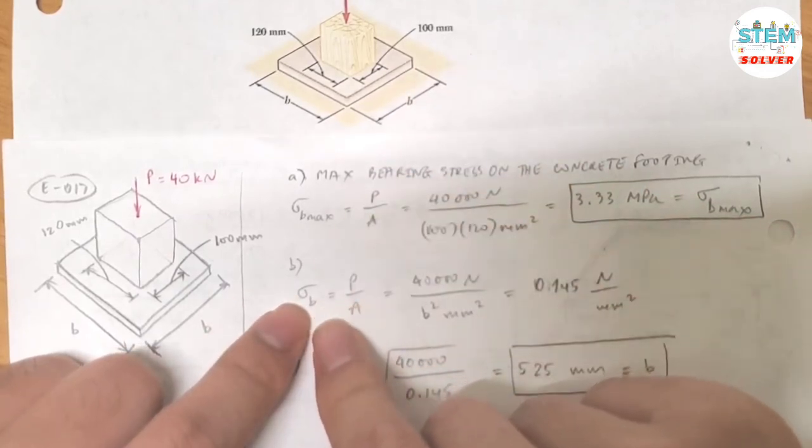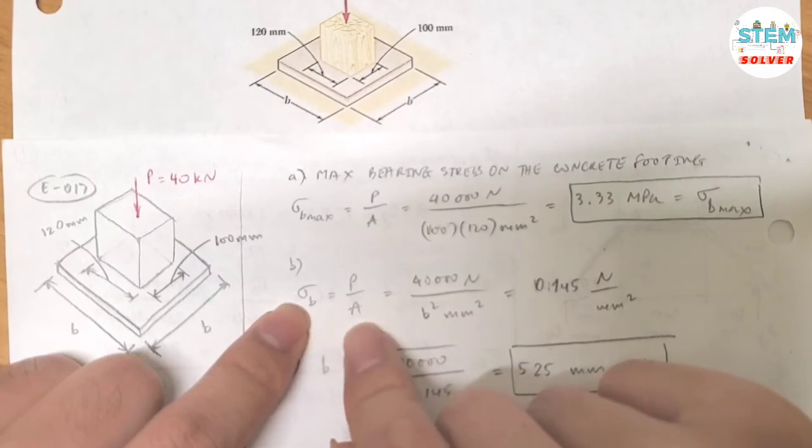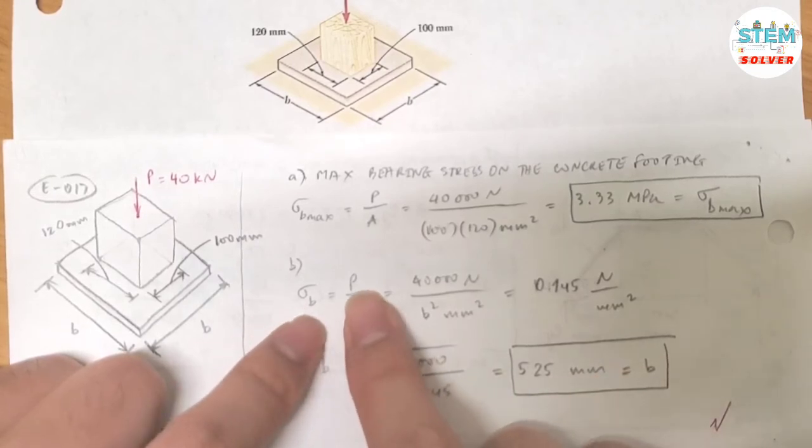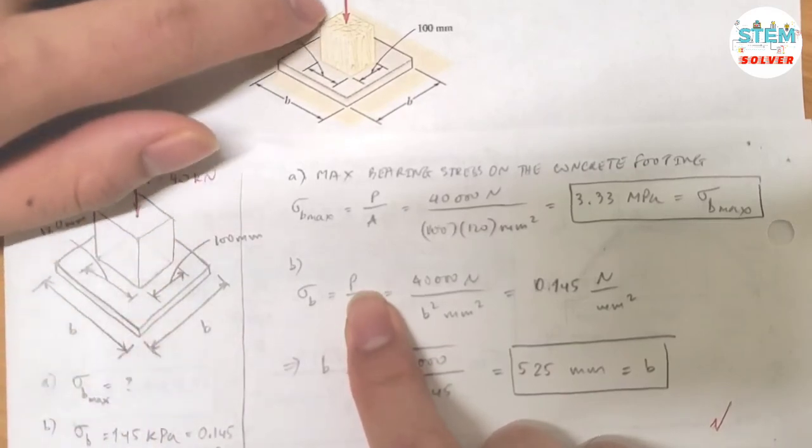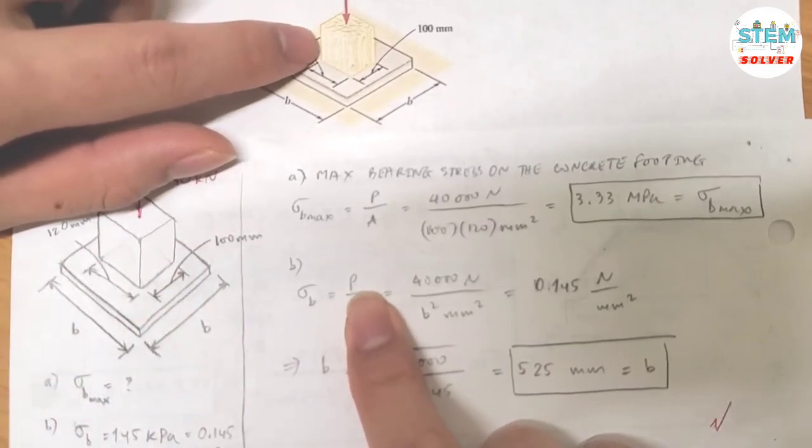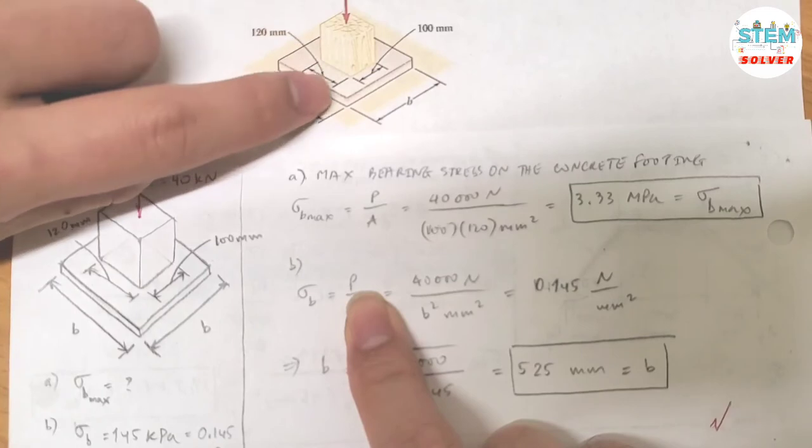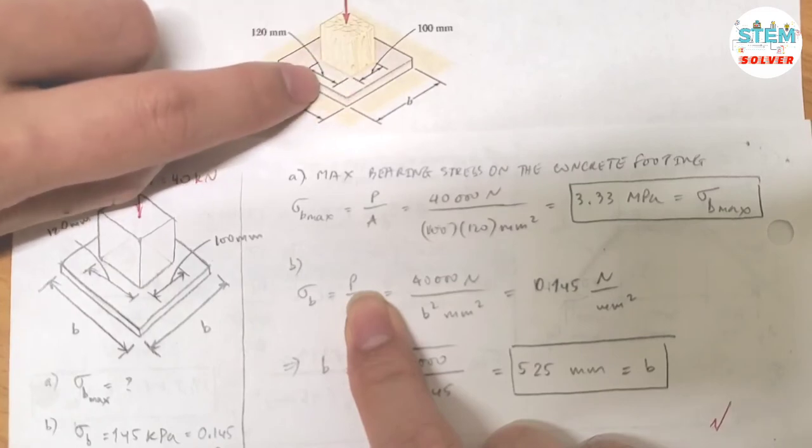Again, the bearing stress is equal to the force divided by the area. So the force is... you apply the force on the wooden post, so that force is also distributed onto the concrete footing.